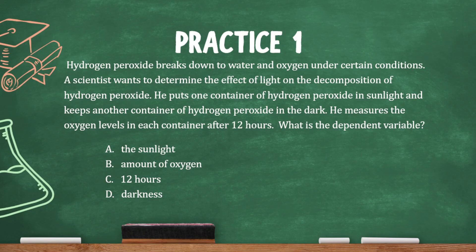What is the dependent variable? First, let's identify what he's changing. He has one container in sunlight and the other in the dark, so the independent variable is the amount of light — so we know it's not answer A, that's the independent variable.